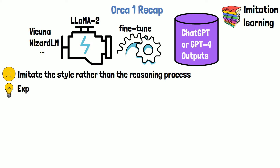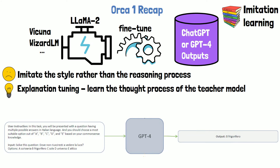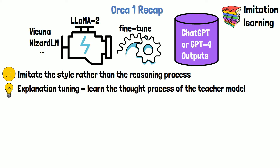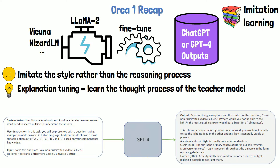To overcome that, Orca 1 presented explanation tuning. With explanation tuning, the student model learned the thought process of the teacher model. The key idea is that previous imitation learning-based models failed to reach higher quality because the responses used for fine-tuning were mostly simple and short. For example, before Orca 1, to generate a training sample, GPT-4 would get a query with an instruction and input as the prompt and generate a response. The output was simple and short. In Orca 1's dataset, detailed responses from GPT-4 and ChatGPT were used that explain the reasoning process of the teacher as it generates the response.